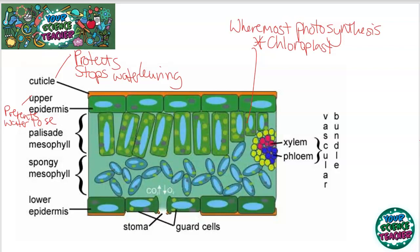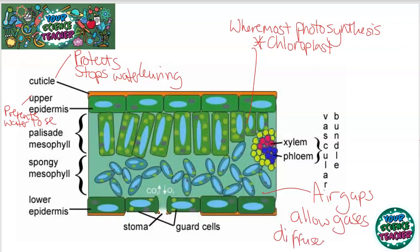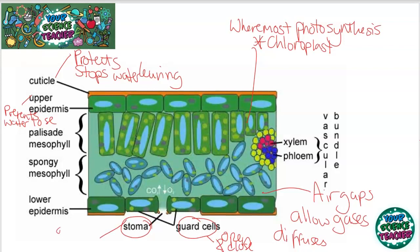The spongy mesophyll layer has lots of air gaps between cells. These air gaps are important as they allow gases to diffuse in and out — the cells need carbon dioxide to photosynthesize and need to get rid of the oxygen they produce, which is a waste product for the leaf. At the bottom of the leaf, on the underside, are the stomata and guard cells. The guard cells open and close the stomata — the gaps which allow gases to leave or enter — getting carbon dioxide in and letting oxygen leave.